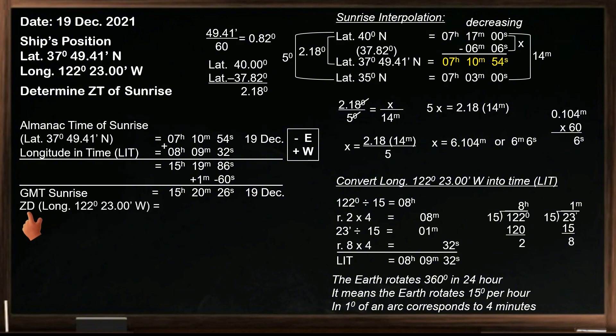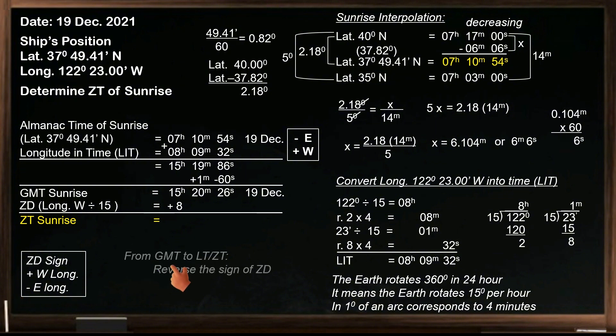Now apply the zone description to determine the zone time of sunrise. To find the zone description, just divide the longitude by 15, and the quotient must be rounded off to the nearest whole number. So the zone description is positive 8. The sign of zone description for westerly longitude is positive, and for easterly longitude it is negative. To find the zone time or local time from the given GMT, the rule is reverse the sign of the zone description. In this case, from GMT to zone time, we will reverse the sign, so it will become negative, then subtract.